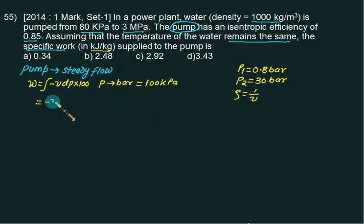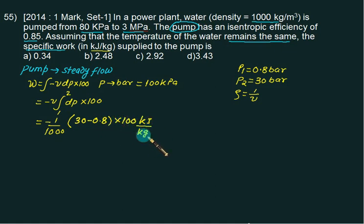We have -v ∫dp × 100 from 1 to 2. So we have -(1/1000) × (30 - 0.8) × 100 as a conversion factor to calculate in kJ/kg. This is our isentropic work, so we have wisentropic = -2.92 kJ/kg.